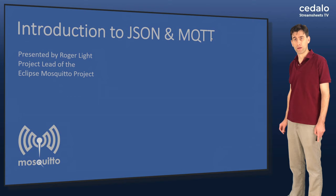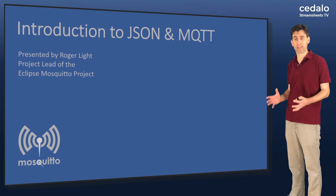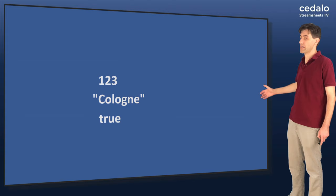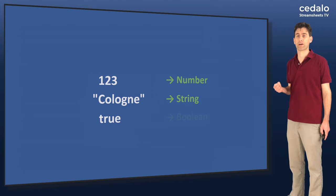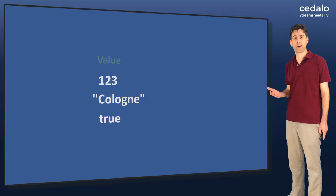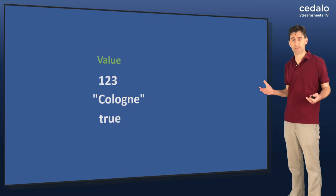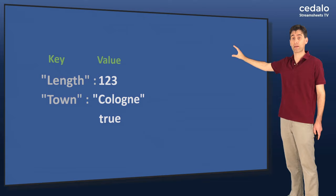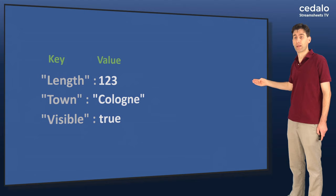Christian has asked me to give an introduction to JSON and MQTT. So let's start with JSON, which is an object that can be used to encapsulate lots of different pieces of data. Before we go on to that, perhaps it's best to have a little bit of a talk about what data is. So I have some examples here: 123, Cologne, and true. These are all different types of data. So 123 is a number, Cologne is a string, and true is a boolean. Now all of these have one thing in common — they are values. Without any further context, it can be very difficult to understand what these values actually mean. If we want to add that context, then we can add a key.